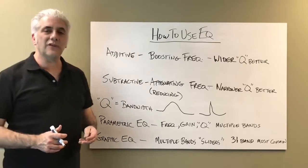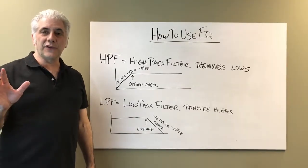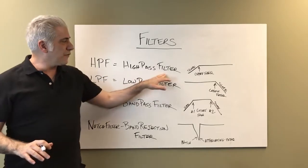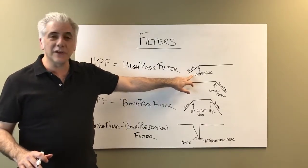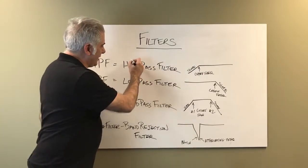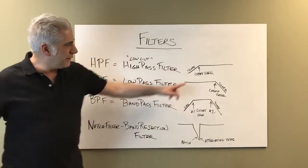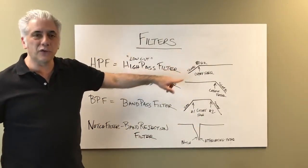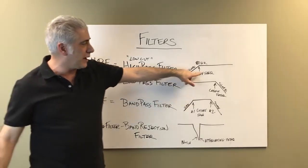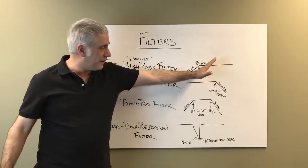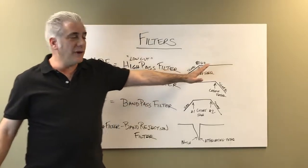Now let's talk about filters. There are four types of filters used in EQing. The first is the high-pass filter, HPF — also called a low cut. It lets high frequencies pass through. The cutoff frequency could be set at 80 Hz, for example, and the slope can go down minus 12 dB or minus 24 dB. You can move the cutoff frequency — it might be at 40, 20, or even up at 500 Hz. Everything below that cutoff will be attenuated.